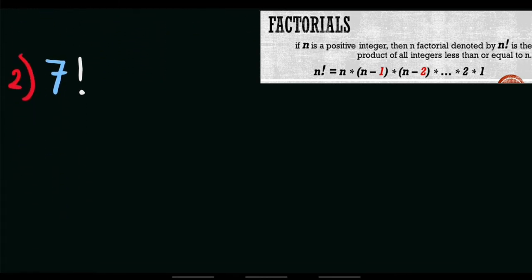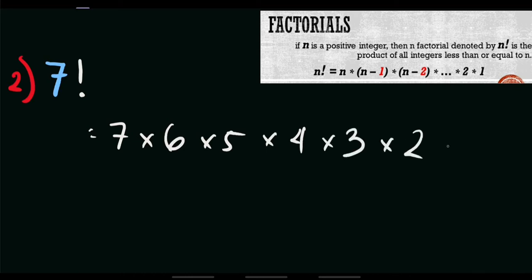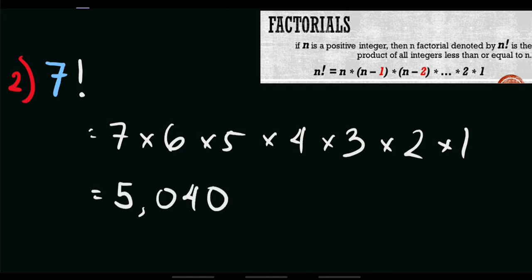For example number 2, if we have 7 factorial, same procedure: 7 factorial equals 7 times 6 times 5 times 4 times 3 times 2 times 1. With this calculator, 7 times 6 times 5 down to 1 equals 5040. So that is the value of 7 factorial.